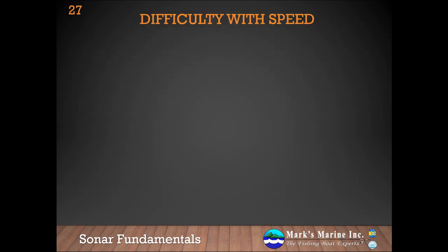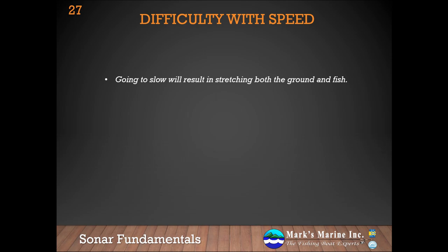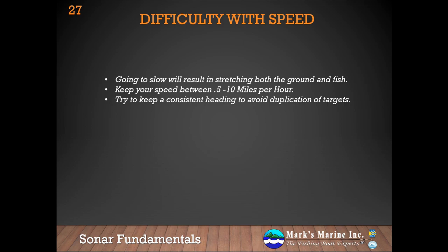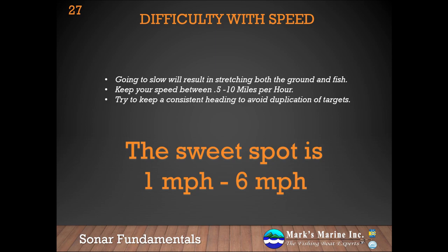Let's talk briefly about why speed is so important when it comes to structure scan. If you go too slow, you're going to hit the target with multiple beam pulses, which means you're going to stretch that target out along the ground — you'll get the same spaghetti effect you typically encounter when stationary and fish are moving under you with traditional sonar. As you speed up, you'll start increasing the gap between pulses and start missing targets; eventually you won't be able to paint the bottom and you'll see distortions. It's also important to keep a constant heading to avoid duplication of targets and cutouts in the bottom where the transducer is unable to stitch the bottom together. The sweet spot is between one mile per hour and six miles per hour.